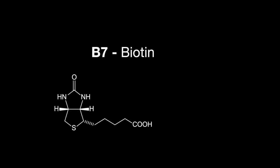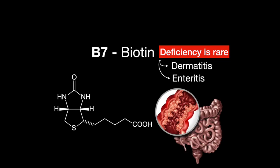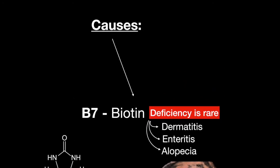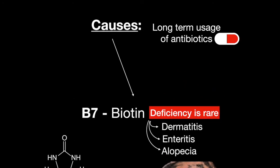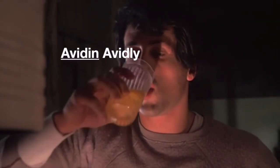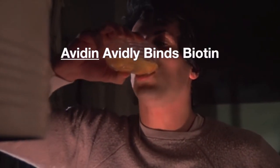A vitamin B7 deficiency is quite rare. If it does happen, dermatitis, enteritis, and alopecia can all be symptoms. Causes include long-term usage of antibiotics and hyperingestion of raw egg whites, because the protein avidin avidly binds biotin.